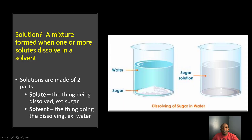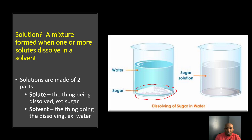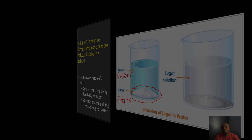First and foremost, what is a solution? It's a mixture formed of one or more solutes dissolved in a solvent. Solutions are made of two parts: we have the solute, the thing being dissolved — for example, sugar — and then we have the solvent, the thing doing the dissolving, and our example would be water. If we look at this picture, notice the sugar in the water: the sugar is our solute, the thing being dissolved. And when our sugar dissolves into our water, we end up having a sugar solution — a combination of sugar and water mixed together.